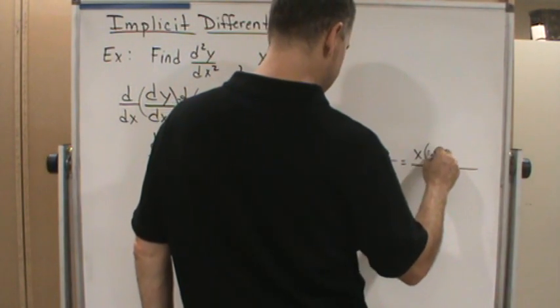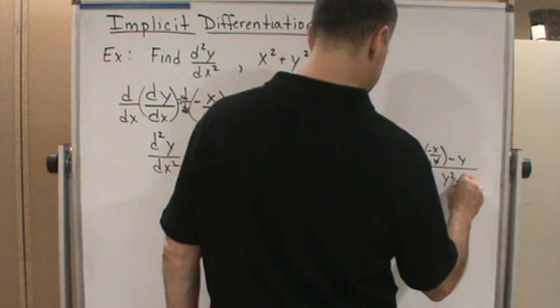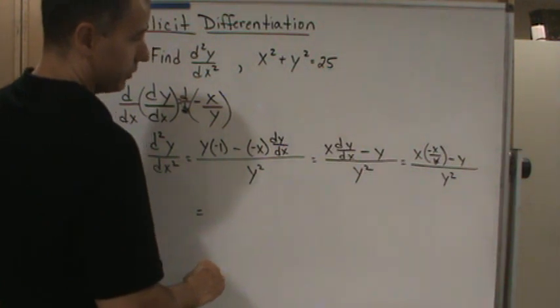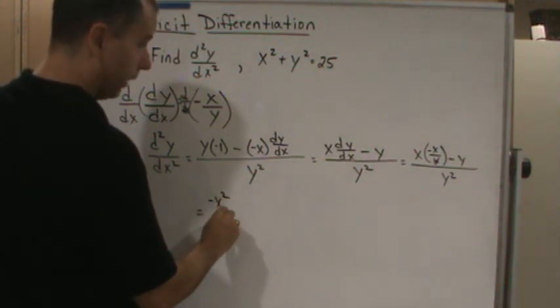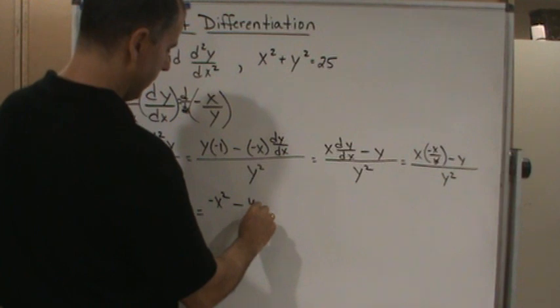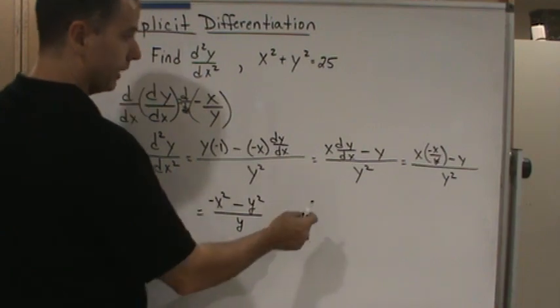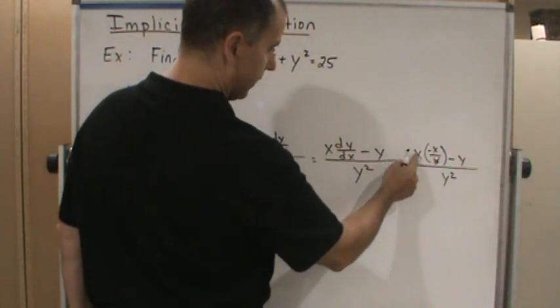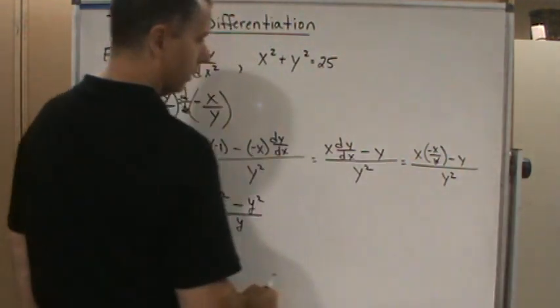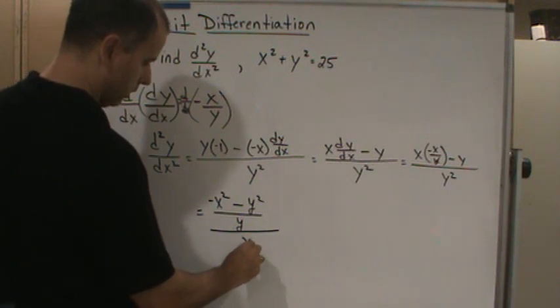So this is going to be x times negative x over y, minus y over y squared. Okay, so now we're going to simplify this some more. Okay, so we're going to get negative x squared minus y squared over y. So all I did was multiply these together to get the negative x squared and then got a common denominator of y. So I get y squared. Then I just put it together. And then this is all going to be over y squared.